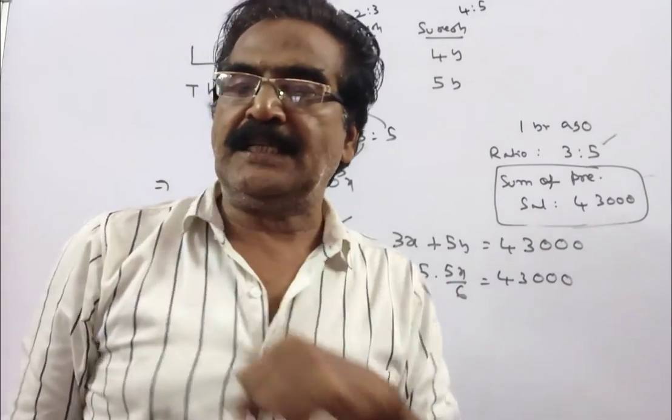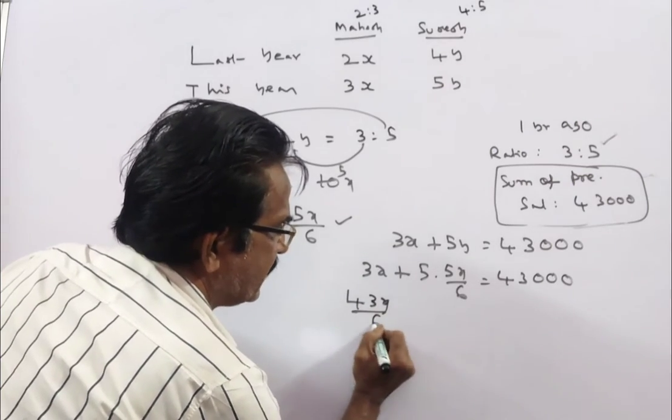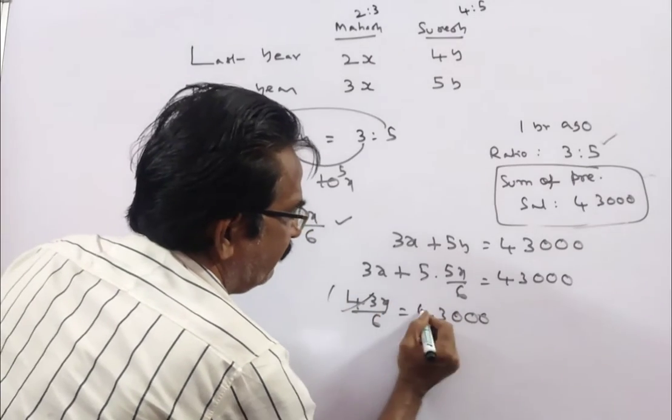18 plus 25 is 43x. So 43x by 6 equals 43,000. Canceling 43, x equals 6,000.